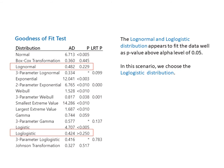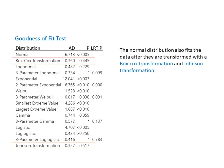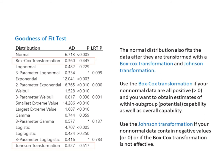In this scenario, we choose the log-logistic distribution. From the capability analysis non-normal distribution method, the PPK is 0.51 based on calculations of the log-logistic distribution model. The normal distribution also fits the data after they are transformed with a Box-Cox transformation or Johnson transformation. Use the Box-Cox transformation if your non-normal data are all positive greater than 0, and you want to obtain estimates of within subgroup potential capability as well as overall capability. Use the Johnson transformation if your non-normal data contain negative values or 0, or if the Box-Cox transformation is not effective.